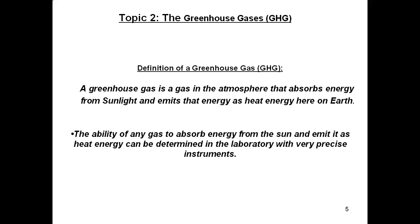Topic 2: the greenhouse gases. Climate researchers have been saying for years that the planet is warming. What you and I want to know is what is causing it to warm. As we just discussed, energy from the sun heats the Earth. If the Earth is warming, we might expect that more of the energy coming from the sun may be staying here on the planet. We have just seen that this heating could be caused by the greenhouse effect and the greenhouse gases in the atmosphere. A greenhouse gas is defined as a gas in the atmosphere that absorbs energy from sunlight and emits the energy as heat energy here on Earth.